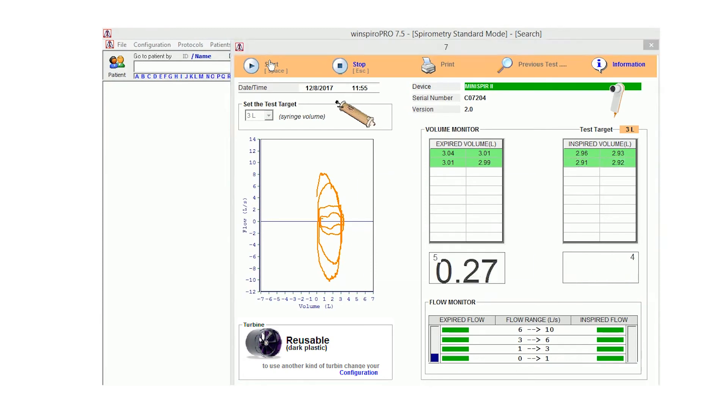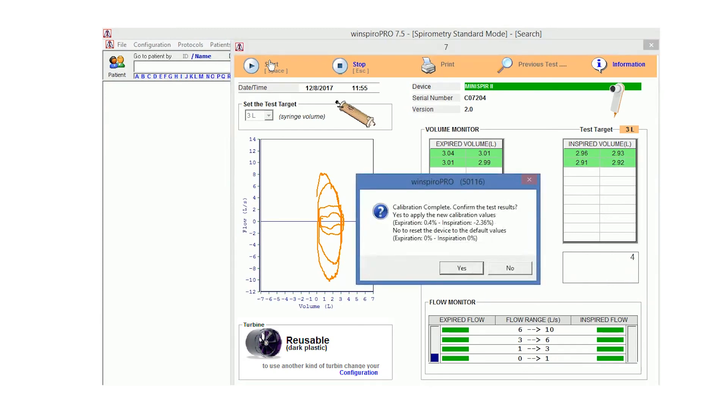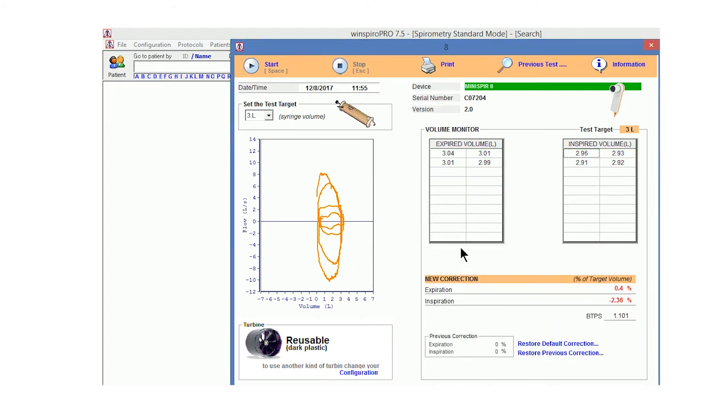When all bars are green, the test will stop automatically. We want the results under the new correction factor to be plus or minus three percent. If they are, then you have a successful calibration check and can print out the results and place them in your calibration file.